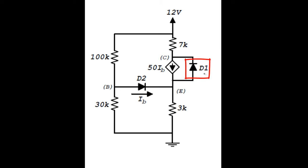Assume that D1 is off and that D2 is on. Using the best available real diode model, compute the voltages VB, VC, and VE. If you determine that D1 is not off, say why. If you determine that D1 is off, say why.